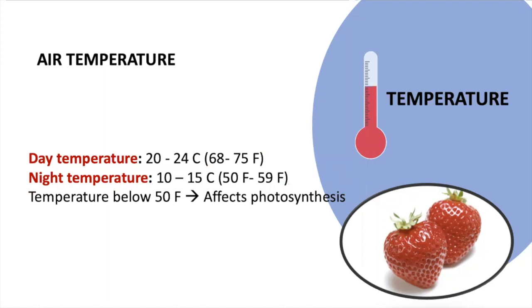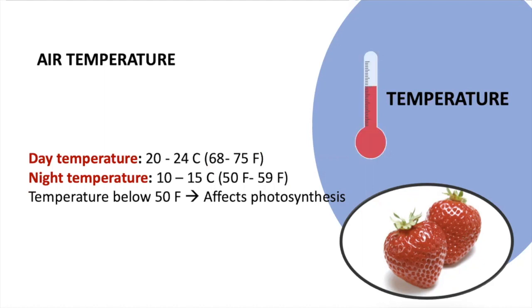The recommendation on air temperature for strawberries goes as follows: we need to maintain 20 to 24 degrees Celsius during the daytime and maintain nighttime temperature from 10 to 15 degrees Celsius. Temperatures below 10 degrees Celsius can affect photosynthesis.